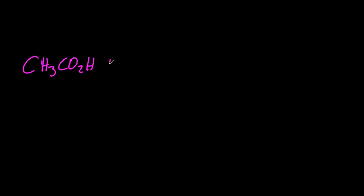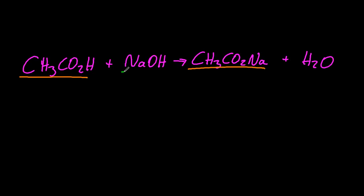Another example, we've got ethanoic acid and sodium hydroxide. It makes sodium ethanoate and water. So what's been made by adding an H+. Well, it looks like water's been made by adding an H+. That's the conjugate acid, conjugate base.